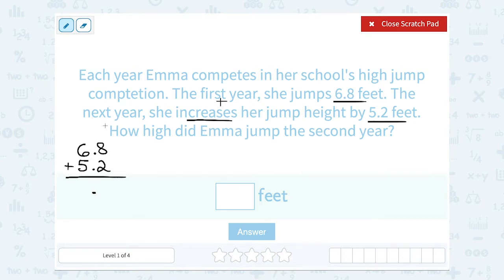So when I add the numbers in the tenths place, 8 plus 2 gives me 10. So I'm going to write the 0, carry the 1. 6 plus 5 is 11, plus that extra 1 gives me 12. So she jumped a height of 12.0 or 12 feet.